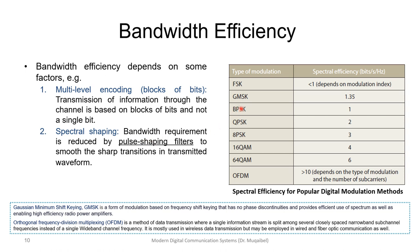Looking at the table: FSK, like in analog systems, is not bandwidth efficient — usually less than 1 bit/s/Hz. GMSK achieves about 1.35. Binary PSK achieves 1 bit/s/Hz. As you increase the constellation size in PSK — 4-PSK gives 2, 8-PSK gives 3, 16-PSK gives 4 — it scales as log₂(M). So even with limited bandwidth, increasing M increases bits per second, at the cost of complexity or power. OFDM achieves very high spectral efficiency and is used in Wi-Fi.